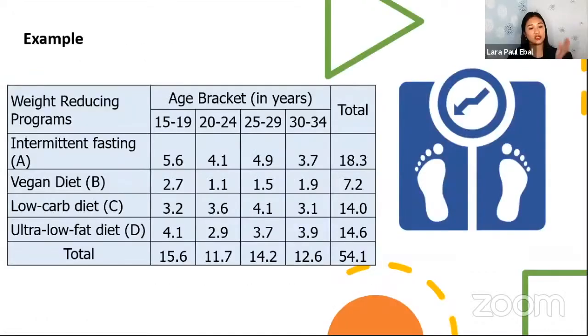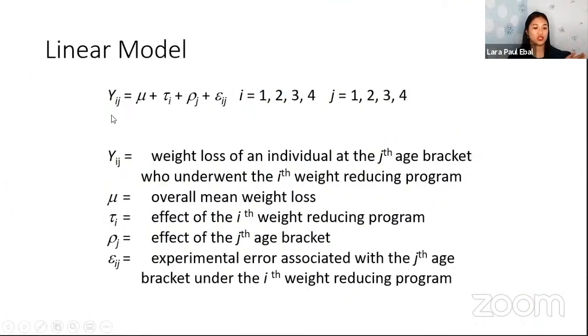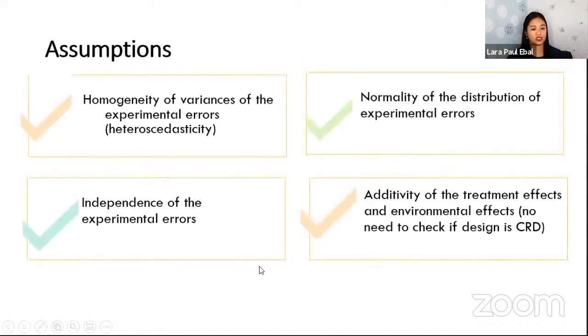Take note that these responses here, or the weight loss, can be modeled using this. Recall before in CRD, we don't have this term, the rho, this one, the third term. We only have mu plus tau i plus epsilon ij. Now, for the RCBD, we have this additional term. If you're just interested now to model the responses, you have this. Y_ij is the weight loss or the observed value. The mu is the overall mean. The tau is the effect of the i-th treatment, and then the rho j is the effect of the block, and then epsilon ij is experimental error.